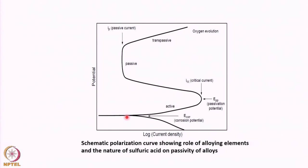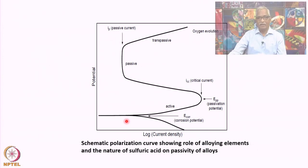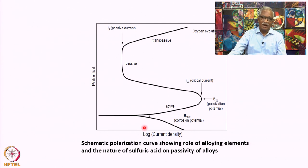A typical polarization curve schematic of a metal showing active-passive transition illustrates how alloying elements and the nature of sulfuric acid affect passivity. This determines how alloys must be selected and how alloy chemistry needs to be changed depending on the nature of the sulfuric acid.